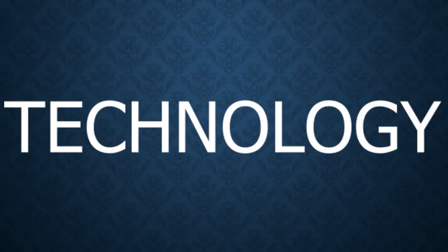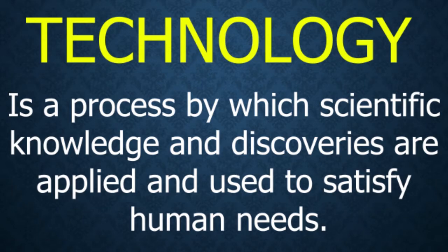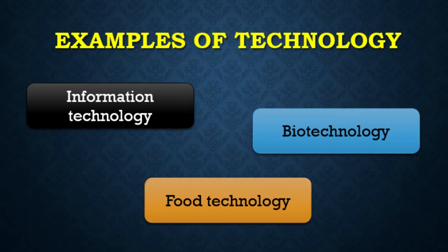Science and technology move hand in hand. Technology is a process by which scientific knowledge and discoveries are applied and used to satisfy human needs. Examples of technology include information technology (IT), biotechnology — which deals with the use of biological principles, particularly microorganisms, zoology, and genetic engineering to produce materials for human consumption — and food technology, which deals with the use of scientific ideas and methods for processing and preserving food.